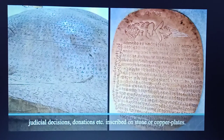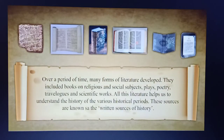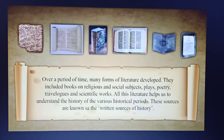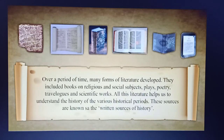Many rulers had their orders, judicial decisions, donations etc. inscribed on stone or copper plates. Over a period of time, many forms of literature developed. They included books on religious and social subjects, plays, poetry, travelogues and scientific works. All this literature helps us to understand the history of the various historical periods. These sources are known as the written sources of history.